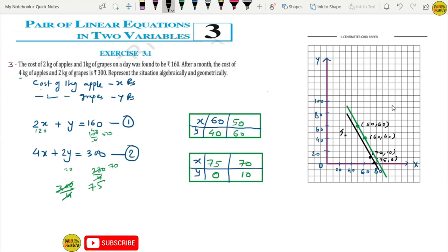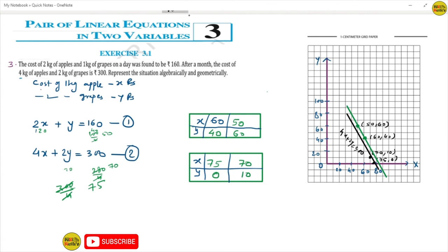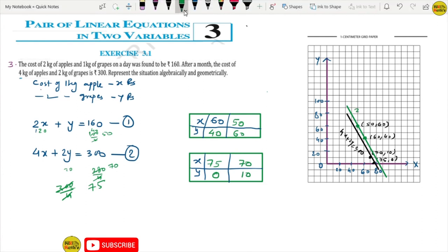Now we plot the lines of that in that point. So which equation is? 4x plus 2y equals 300. And which equation is? 2x plus y equals 160. This is the another equation. So we got these two equations. Now I can see it from the lines. How is it going? The parallel lines.